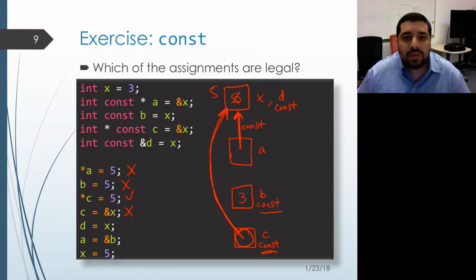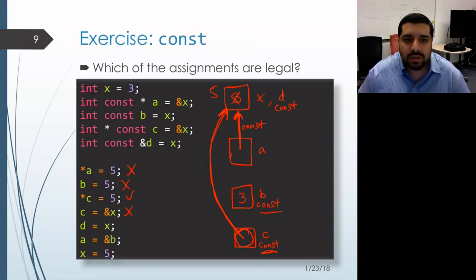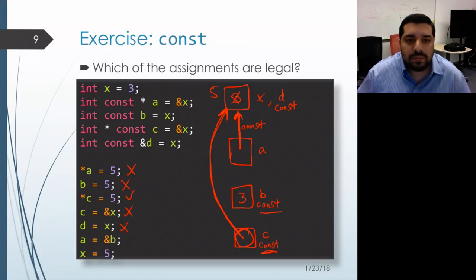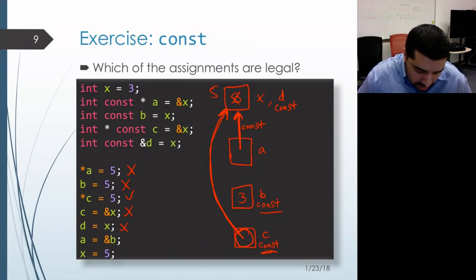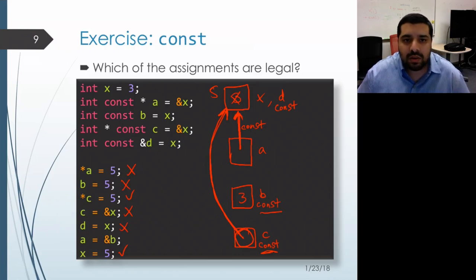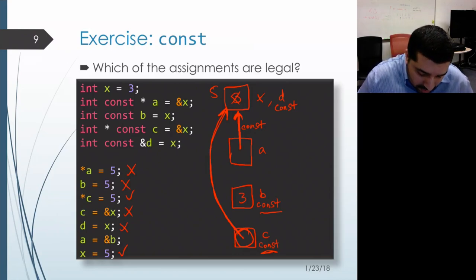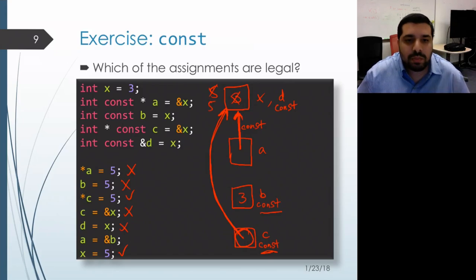On the next line, we attempt to change the object associated with both d and x. However, since we're changing it through the name d, and that's a name we said was a reference to a constant integer, the compiler won't actually let us do that. Looking at the last line — skipping one line for a moment — we've attempted to modify the same object using the name x. We didn't place any restrictions on the name x, so that would actually be allowed and would change the value of that object to five.